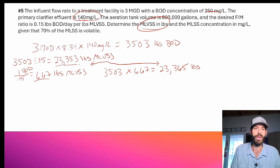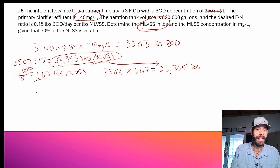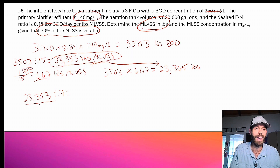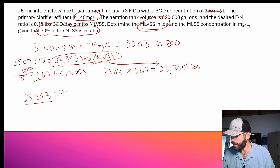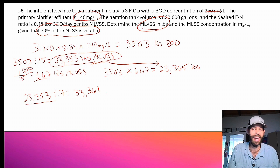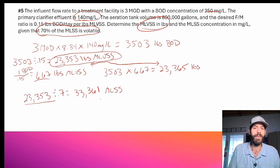Now that I've got my 23,353 pounds of MLVSS and have solved half of the problem, I need to convert that to an MLSS concentration. So: 23,353 divided by 0.7 — because 70% of the MLSS is volatile, I know my volatile pounds and I want my MLSS pounds, so I divide by 0.7. That gives me 33,361 pounds of MLSS. You can check your work by multiplying back by 0.7, which takes you right back to the MLVSS pounds.